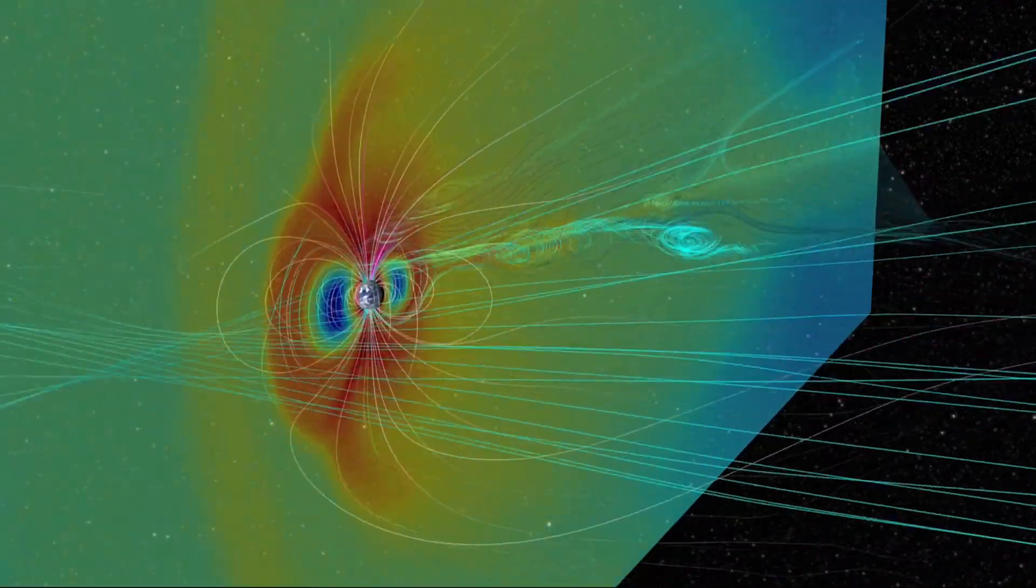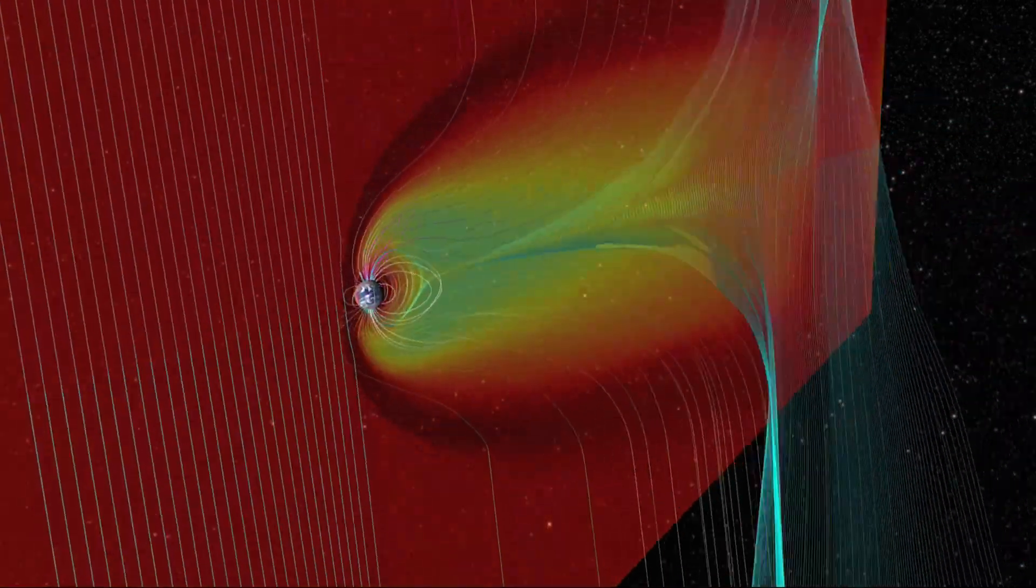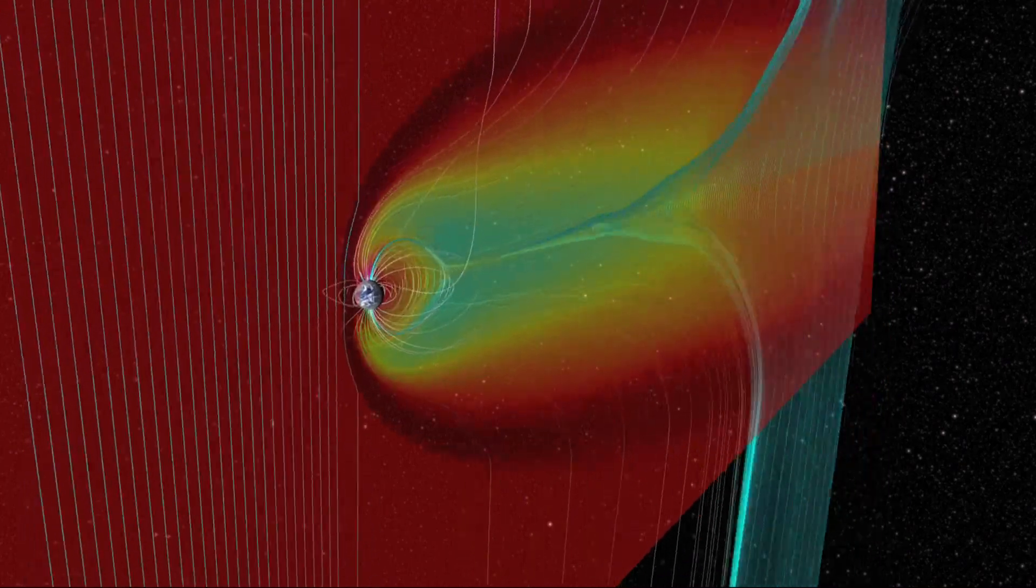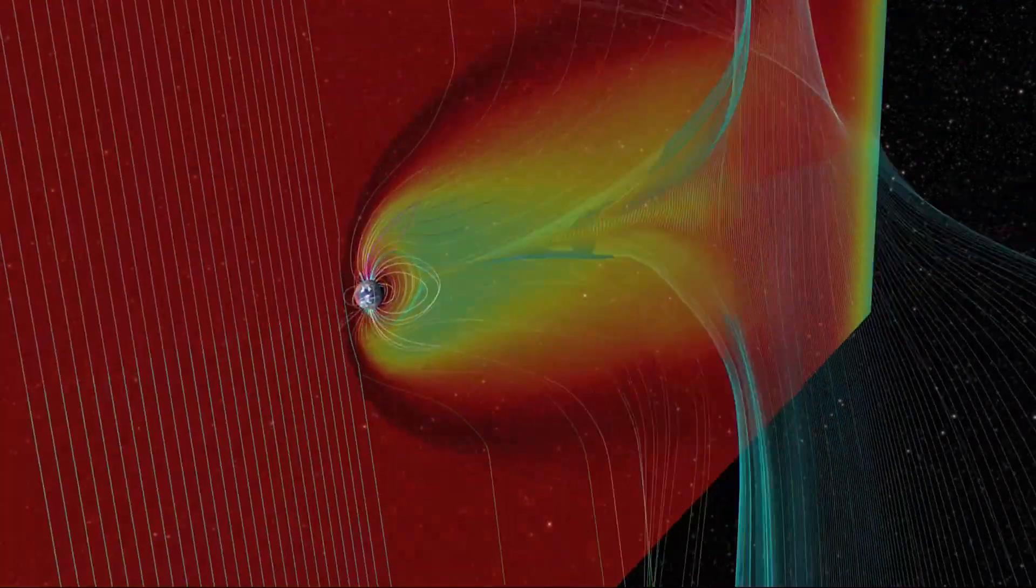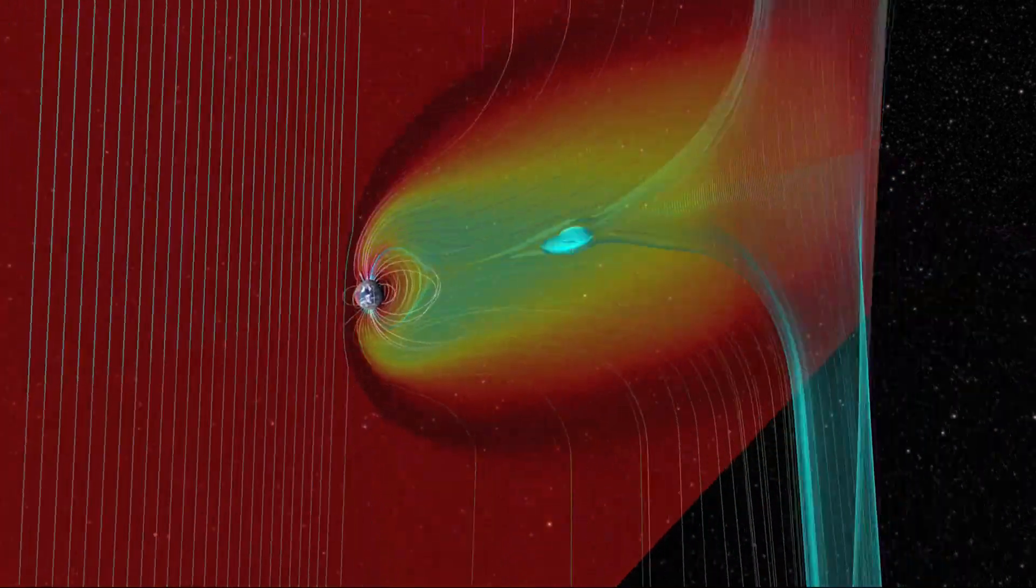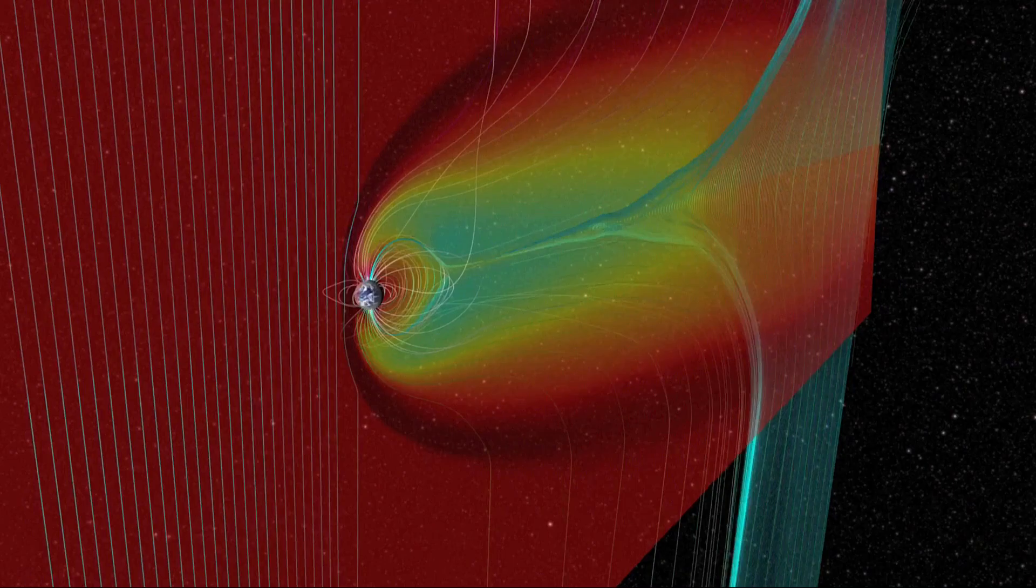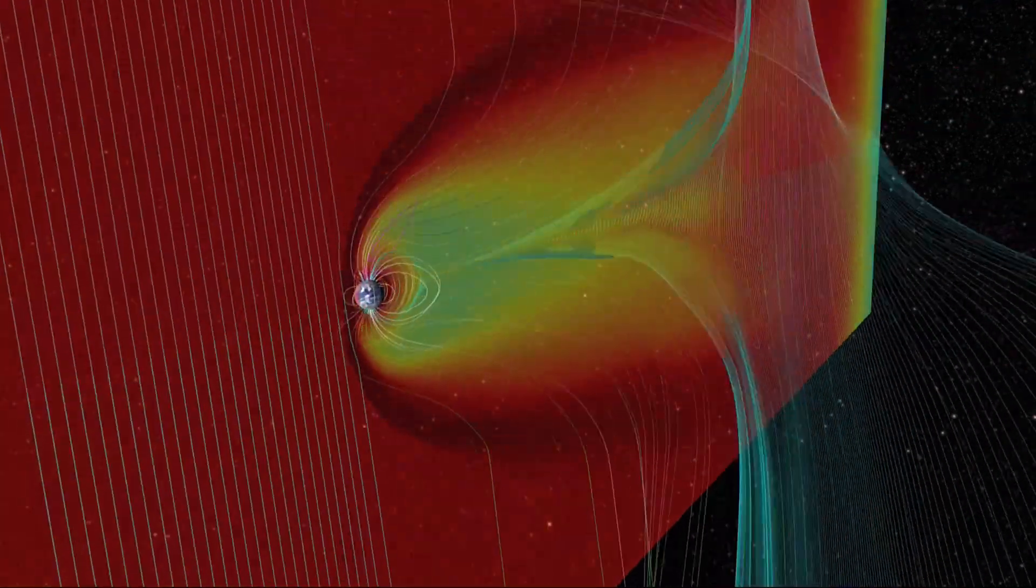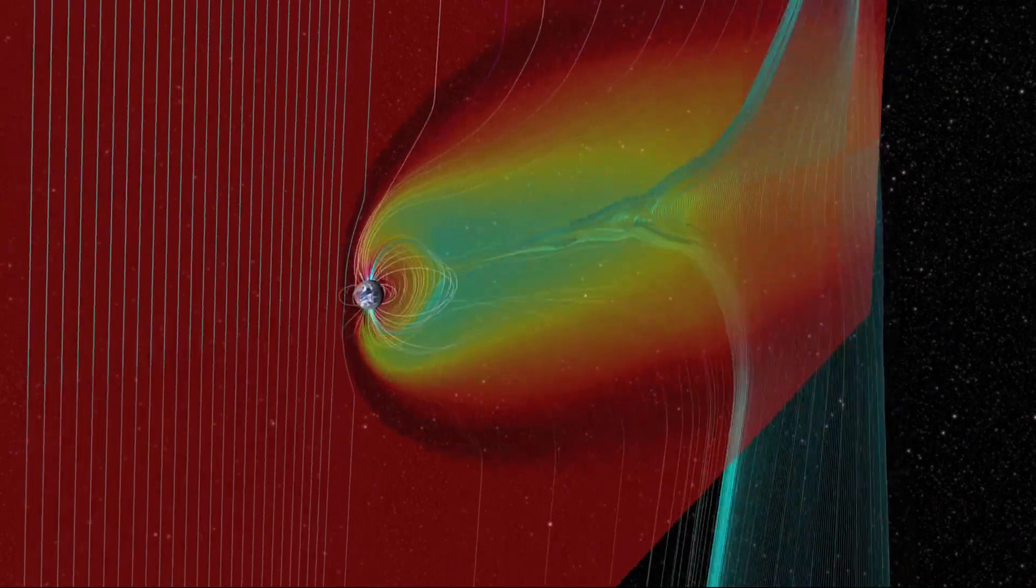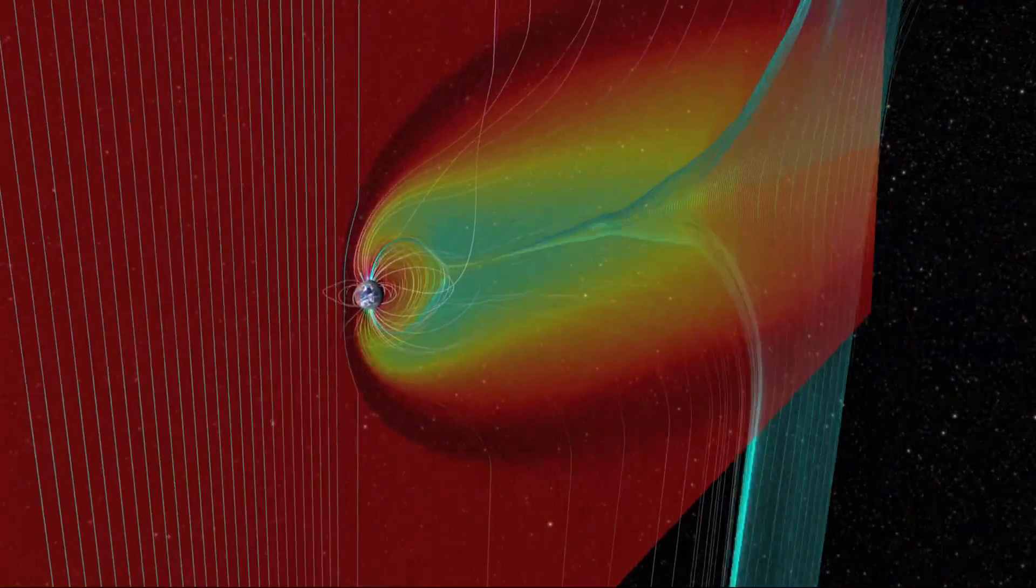Now what would that do? Well, a direct hit like that would be able to fry a lot of communication satellites. So we depend on communication satellites here on Earth and those would be completely, could be completely wiped out by this. At least those that at the time that it hits are on that side. And since they are moving, all of them would eventually make it into that region. So it would just depend on the length of the actual impact of the coronal mass ejection.